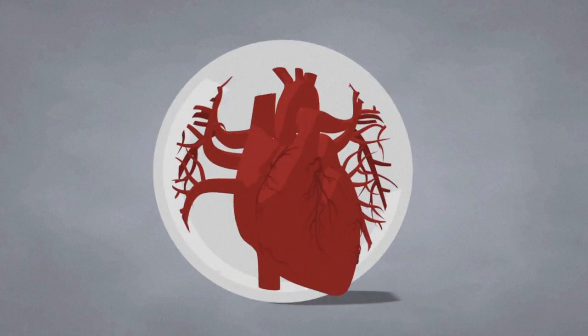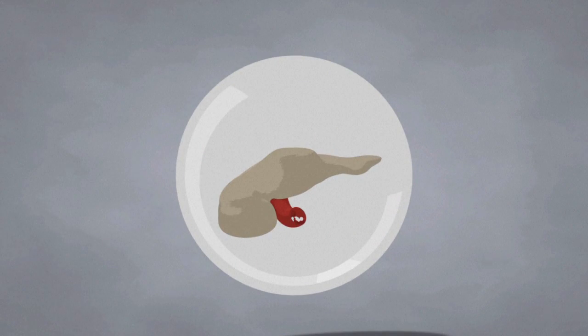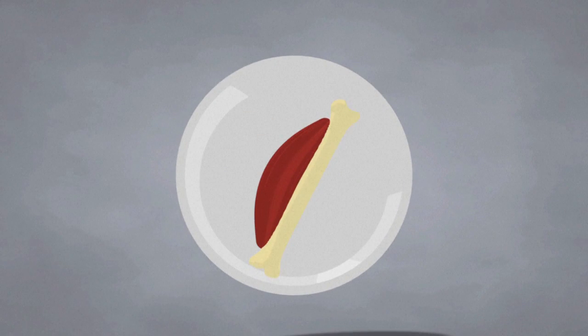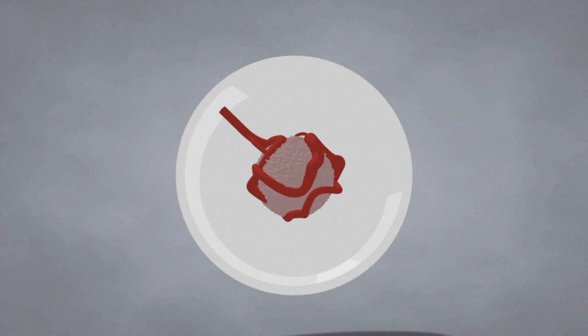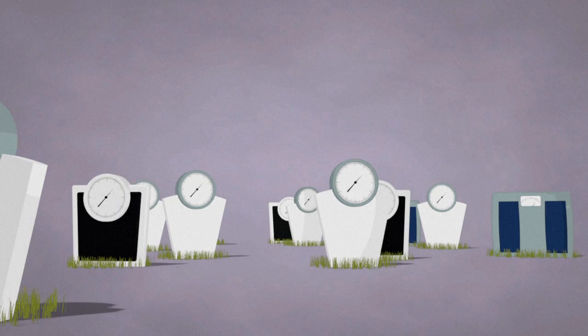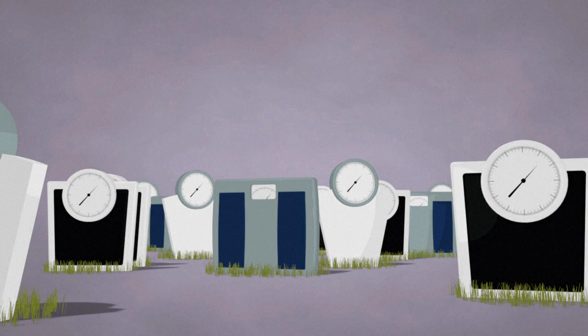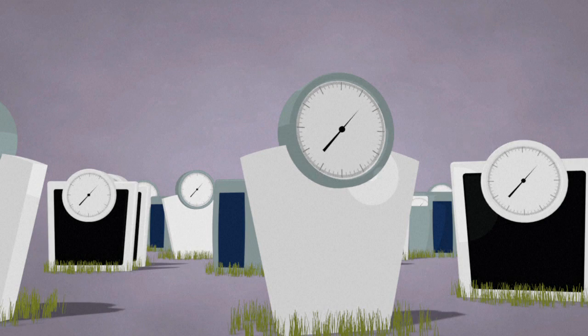The main health problems associated with obesity are cardiovascular diseases, diabetes, musculoskeletal disorders, and some types of cancer. Each year, at least 2.6 million adults die as a result of being overweight or obese, making it the fifth leading risk for global deaths.